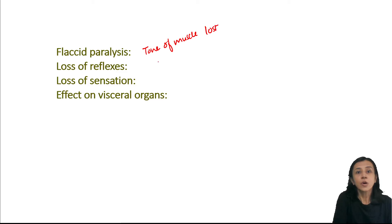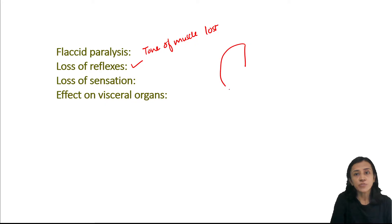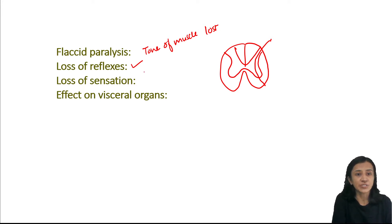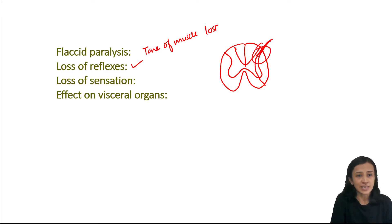All reflexes are lost. For reflex action, we require anterior and posterior roots, sensory neurons, and motor neurons, and because of the injury, all connections are lost. All sensations are also lost because of injury to the posterior nerve root, which carries all the sensory tracts.